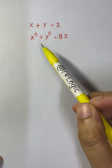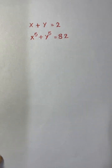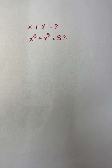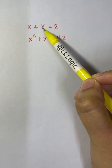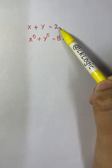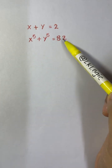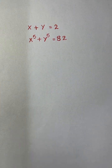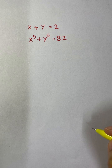Hi guys, here we are going to solve a system of equations: x plus y equals 2, and x to the 5 plus y to the 5 equals 82. We are going to talk about two methods by which we can solve these two equations.